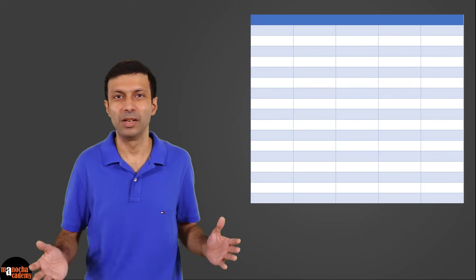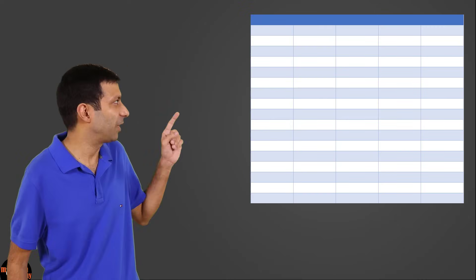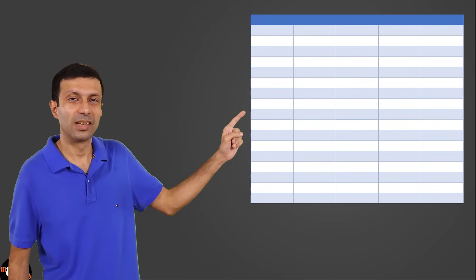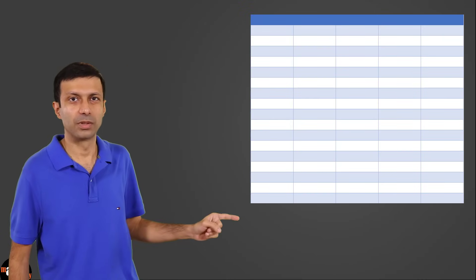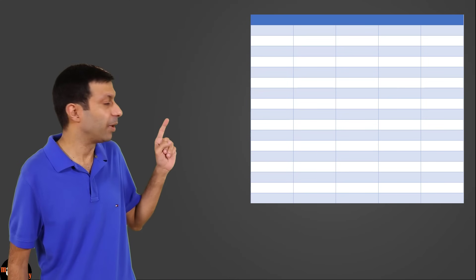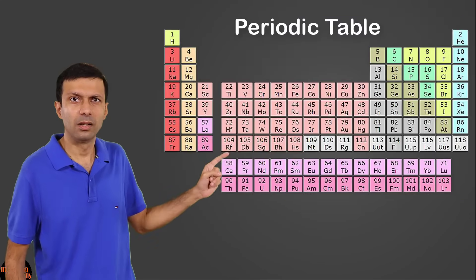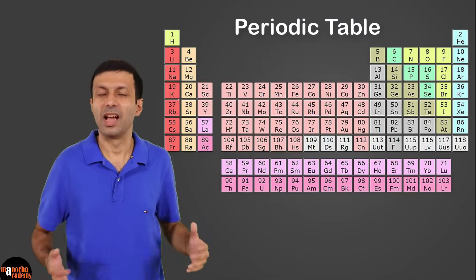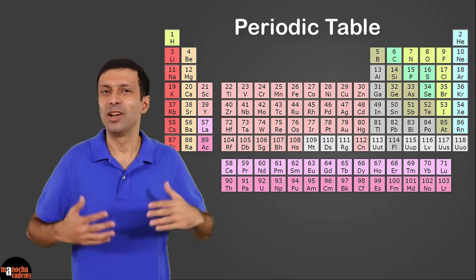Normally when you draw a table, it looks something like this, with rows and columns. But if you take a look at our periodic table, it has a strange shape and we are going to see why.